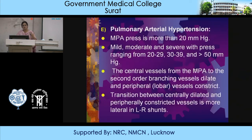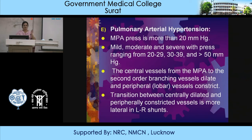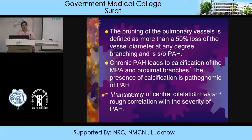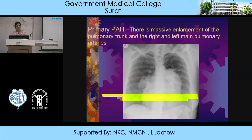Pulmonary arterial hypertension occurs when main pulmonary artery pressure is more than 20 mmHg. It may be mild (20–29), moderate (30–39), or severe (more than 50 mmHg). The central vessels from the MPA to second-order branching vessels dilate, while peripheral or lobar vessels constrict — the transition between centrally dilated and peripherally constricted vessels is more lateral. Pruning of pulmonary vessels is defined as more than 50% loss of vessel diameter at any degree of branching and is suggestive of pulmonary arterial hypertension. Chronic PAH leads to calcification of the main pulmonary artery and proximal branches, which is pathognomonic. This case of primary pulmonary hypertension shows massive enlargement of the pulmonary trunk and the right and left main pulmonary arteries.